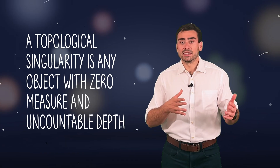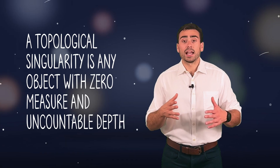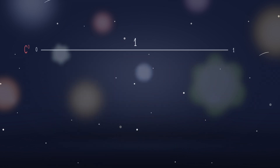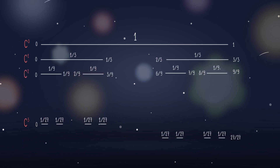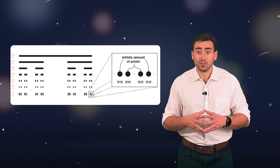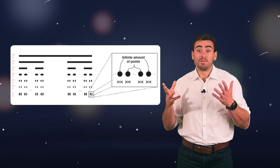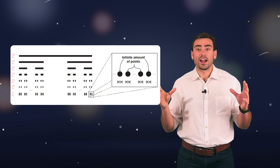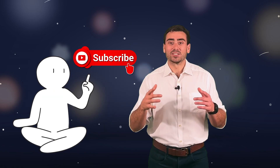A topological singularity is any object with zero measure and uncountable depth — it's a tool to describe an entity that exists beyond the limits of our traditional understanding. The most famous example is the Cantor set, which is constructed by repeatedly removing the open middle thirds of a line segment, ad finitum. What remains when you do this an infinite number of times are uncountably many different points that are so fragmented they take up zero measure — no length whatsoever. We'll dive more into the Cantor set in a later video, so make sure to subscribe if you want to learn more.